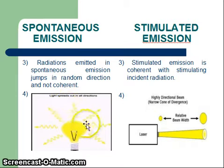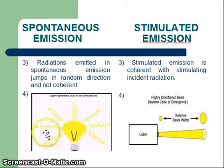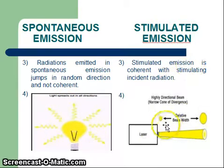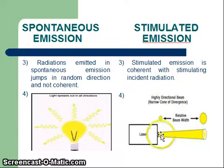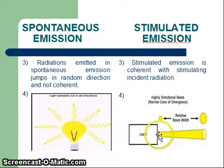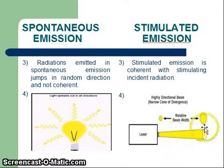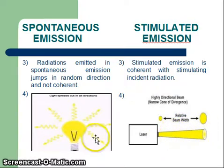In the case of spontaneous emission, like from a bulb, light spreads in random directions. Whereas in the case of stimulated emission, the best example is a laser — here the light forms a highly directional beam, or a narrow cone of divergence, meaning there is much less divergence compared to spontaneous emission.